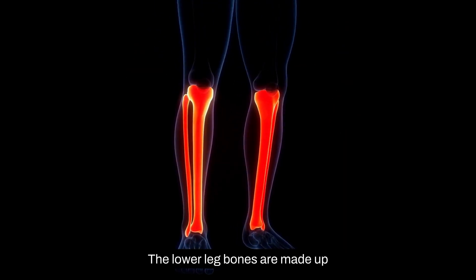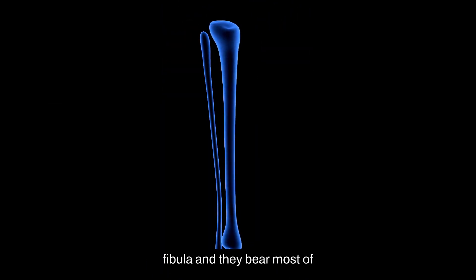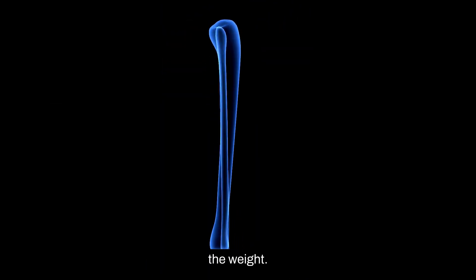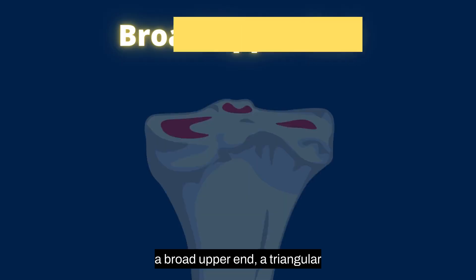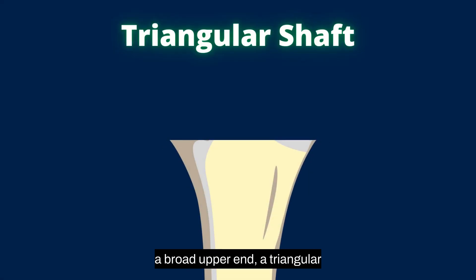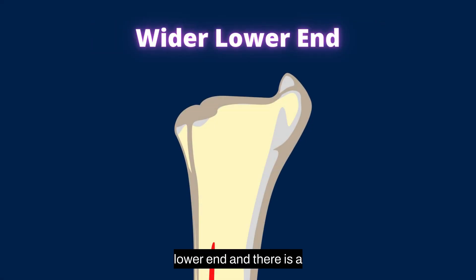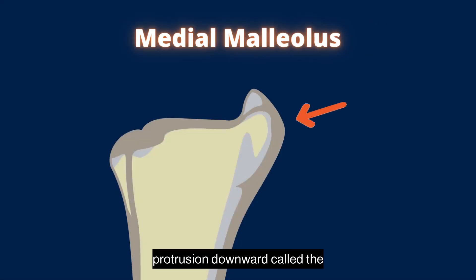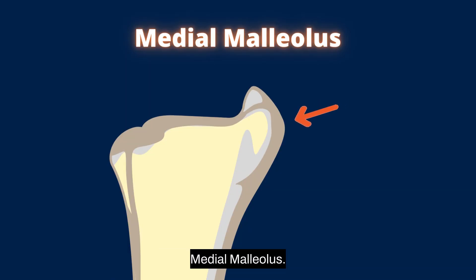The lower leg bones are made up of two bones, the tibia and the fibula, and they bear most of the weight. The tibia bone bears the weight of the body and it consists of a broad upper end, a triangular shaft with a sharp anterior border, and a slightly wider lower end. There is a protrusion downward called the medial malleolus.